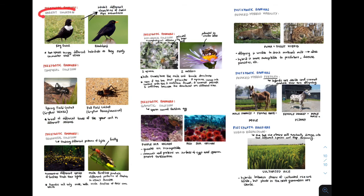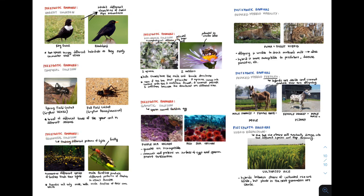Overall, we've talked about habitat isolation, temporal isolation, behavioral isolation, mechanical isolation, and gametic isolation — which are all prezygotic barriers. And then we have reduced hybrid viability, reduced hybrid fertility, and hybrid breakdown, which are postzygotic barriers.